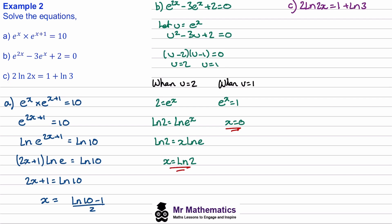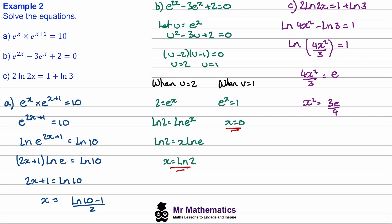For part C, we can use the power rule of logs to bring this 2 up, so this becomes the natural log of 2x squared. Then we move the natural log of 3 to the left-hand side and write it as a single log. Using the division rule, this becomes the natural log of 4x squared over 3 equals 1. Then we raise e to both sides — that cancels out the natural log — and we know that e to the power of 1 is just e. So we multiply both sides by 3 and divide by 4 to find x squared, then take the square root. We can tidy this up because 4 is a square number, so we square root the numerator and denominator separately to get our final solution.